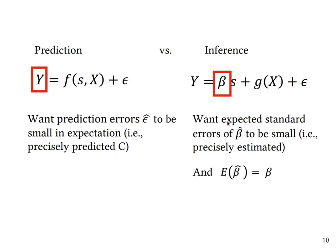For inference tasks what we want is that expected standard errors that we estimate for beta hat be as small as possible, meaning that we want our beta to be precisely estimated. And another thing that we want is that our estimator beta hat would be unbiased for the parameter of interest beta, so that in expectation our estimate of beta will be giving us beta itself.